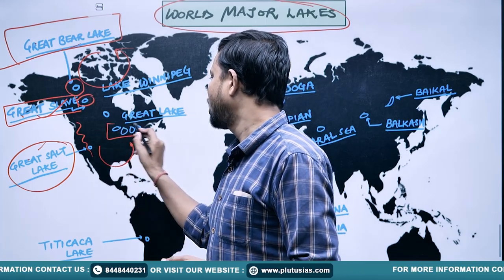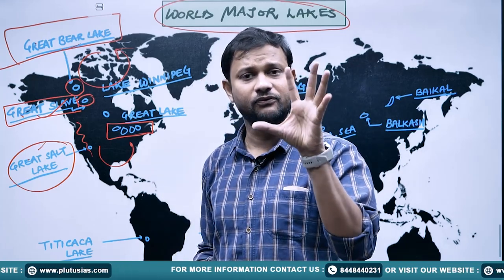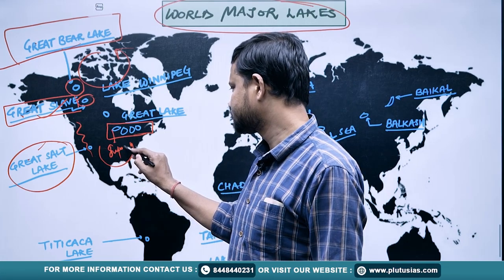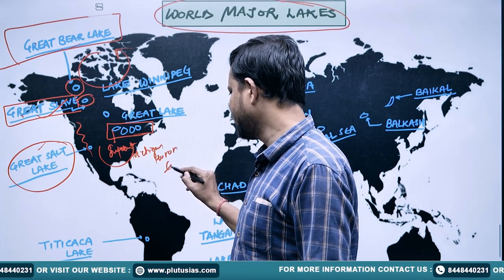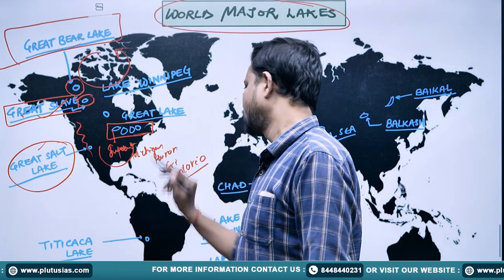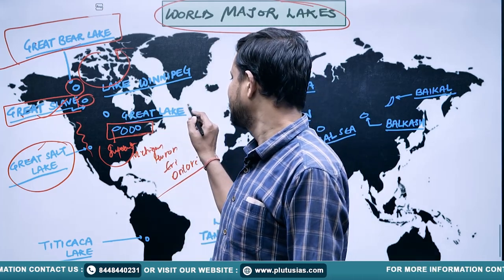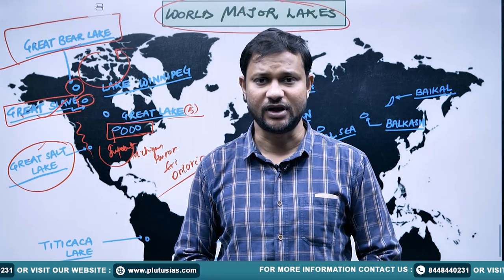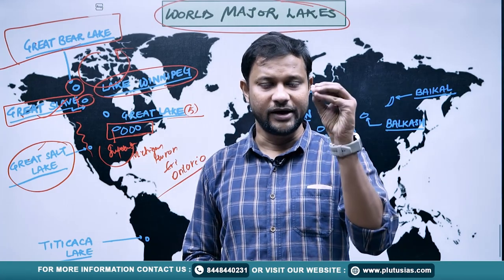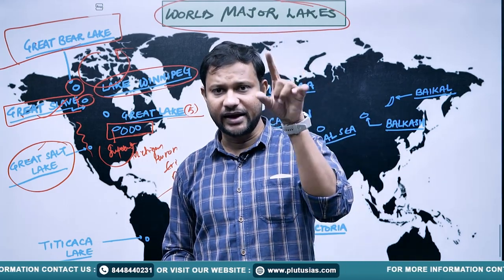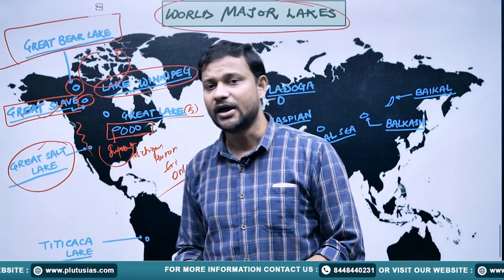Next is the world-famous Great Lakes system. There are five different lakes in this system: Superior, Michigan, Huron, Erie, and Ontario. These five lakes make up the Great Lakes system. Then there is Lake Winnipeg. These are all cold-water lakes lying in the north. So in North America: Great Bear Lake, Great Slave Lake, Great Salt Lake, the Great Lakes system, and Lake Winnipeg.